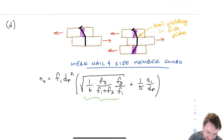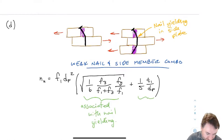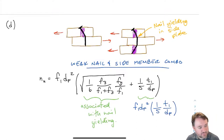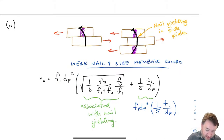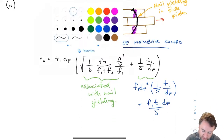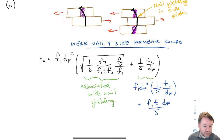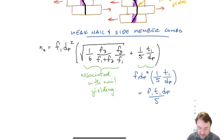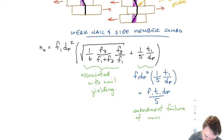In the equation for failure mode D there are a couple of terms. One is associated with the nail yielding. If we take the second term and multiply it by the number on the outside of the parentheses and simplify, we get F1 times T1 times DF divided by 5, which we recognize as the regular embedment strength divided by five. So this is an embedment failure of the wood, modified to account for the fact that it's being damaged on an angle rather than pulled directly through, so the embedment strength is lower.